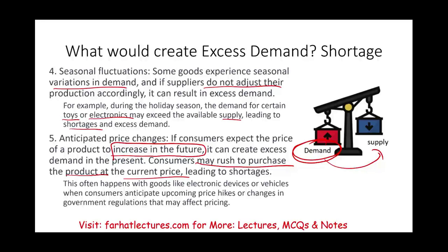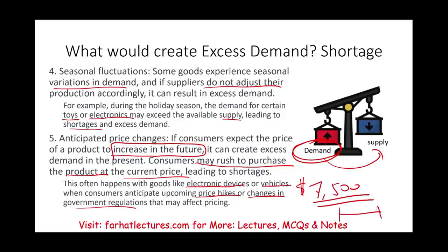This happens also with electronic devices or vehicles when consumers anticipate price hikes or changes in government regulation. For example, there was a tax credit of $7,500 if you buy an electric vehicle. Every year before the government decided whether to renew it, people would rush to buy their car to get the $7,500 credit. This happened for several years — you'd see everyone rush to get that extra credit from the government before the regulation changed.